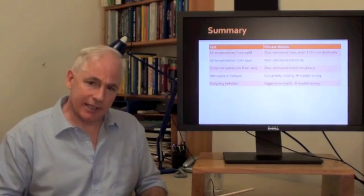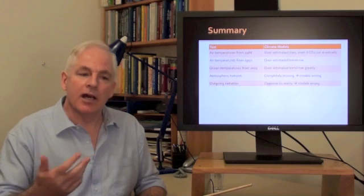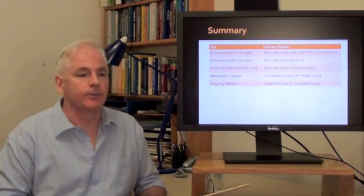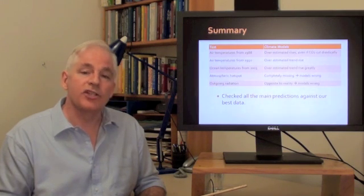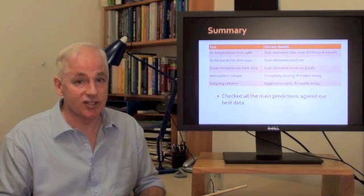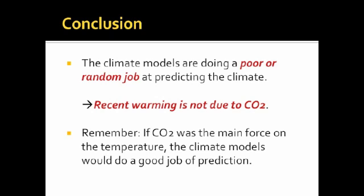So, let's conclude. Let's summarize what we've seen. The air temperatures from 1988, due to Dr. Hansen, even if we cut CO2 drastically, he still overestimated the temperature rise. The climate trends, air temperature trends since 1990, overestimated. The ocean temperatures, when we started measuring them properly in 2003, they've been flat. Climate models overestimated them too. The climate models predicted an atmospheric hot spot. There isn't one. The climate models get the direction of outgoing heat completely wrong. We've checked all the main predictions against our best and latest data from impeccable sources. The climate models got them all wrong. So, we can conclude from that that the climate models are doing a poor or random job of predicting the climate. From which we can conclude that the recent warming is not due to CO2. Remember, if CO2 was the main force on the temperature, the climate models will be doing a good job of prediction.